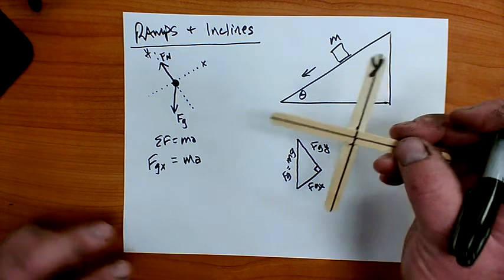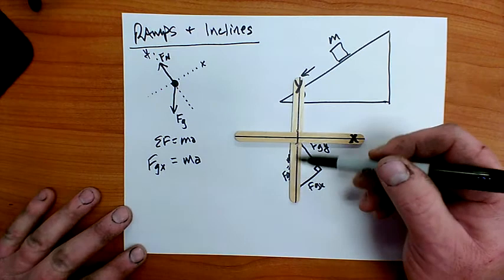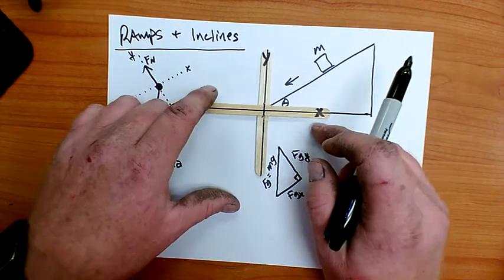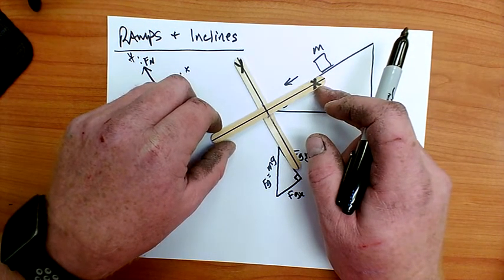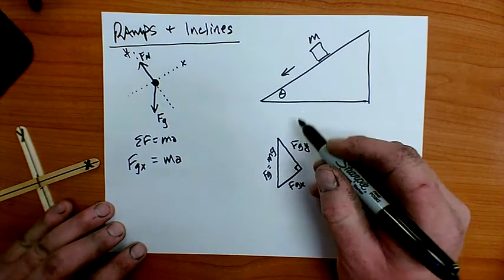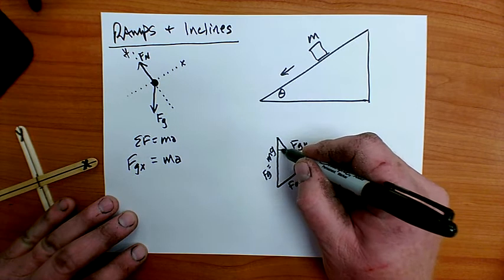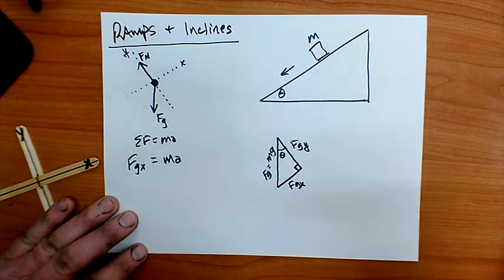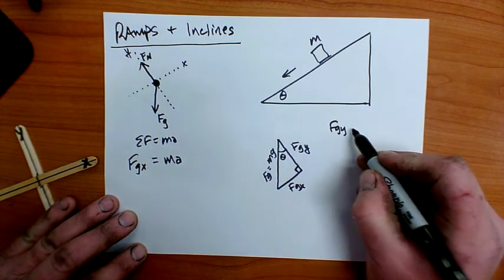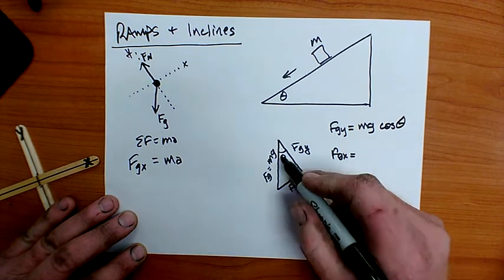The force of gravity is in the old y direction, the vertical direction. When I rotated the x-axis through the angle theta, the y-axis also rotated through the angle theta. So the angle between the force of gravity and fgy is equal to the angle of the ramp as measured from the horizontal. That means up here in this corner is my angle theta. Once I recognize this, I can see that fgy is the adjacent side.